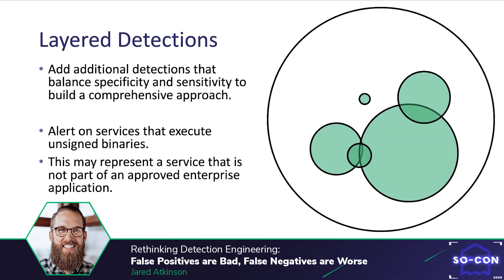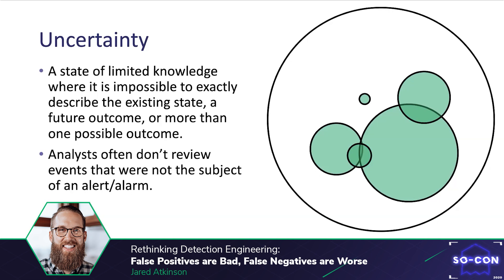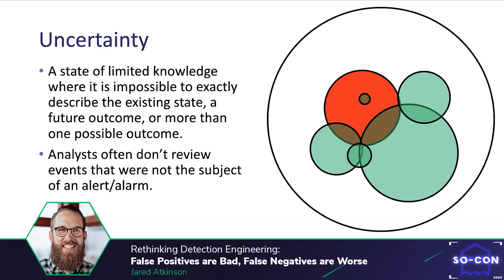In statistics, uncertainty basically says that we have limited or fallible knowledge which makes it impossible to accurately describe the existing state, a future outcome, or more than one possible outcome. This means we can't possibly quantify the volume of false negatives that result from our detection efforts. Additionally, it is common for organizations not to have a safety net for reviewing events that were not subject to an alert. We don't know where the condition positive is relative to our classification rule — maybe we get lucky and the majority of condition positive events are classified as positive, or we may have a large portion of condition positive events become false negatives. How can we account for this uncertainty?